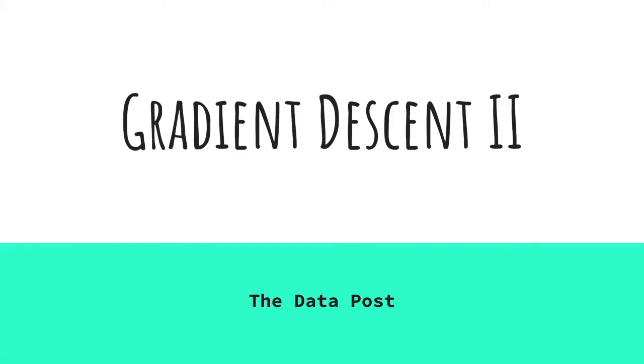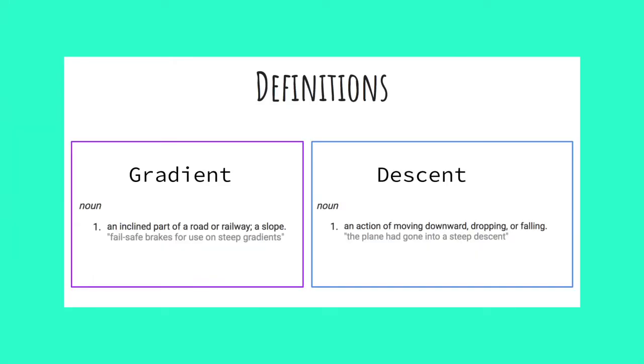In part two of gradient descent, we will get into the meat of the algorithm. Let's start by breaking this phrase down into the definition of its two terms: gradient and descent.